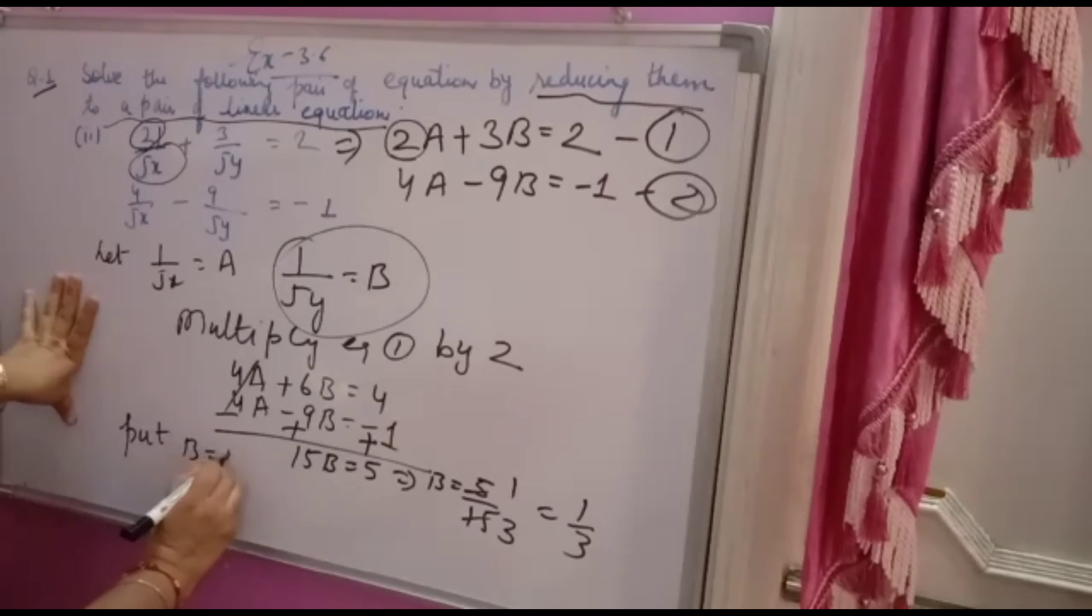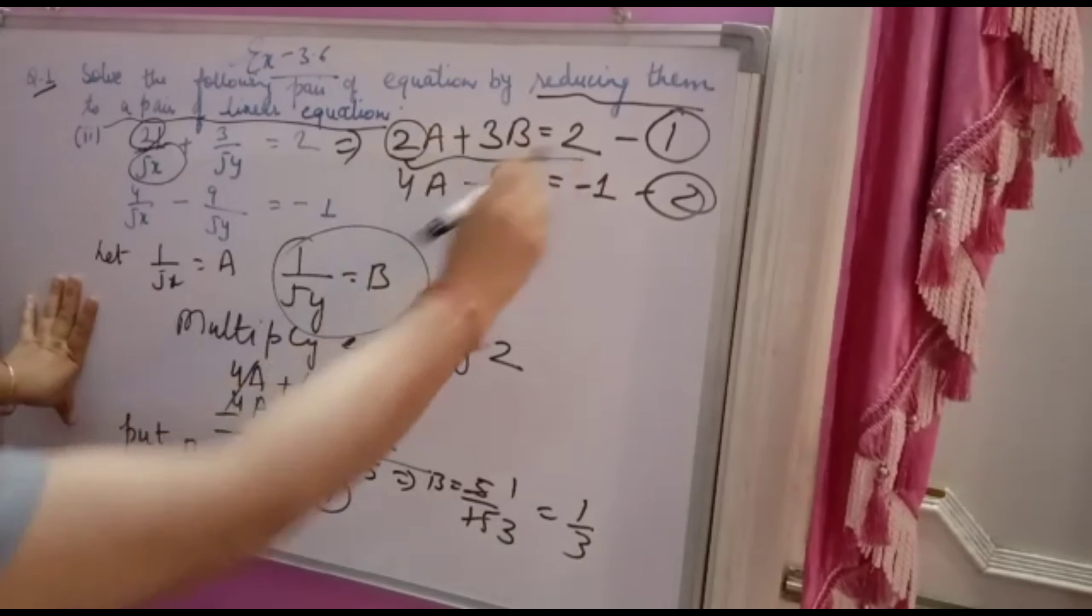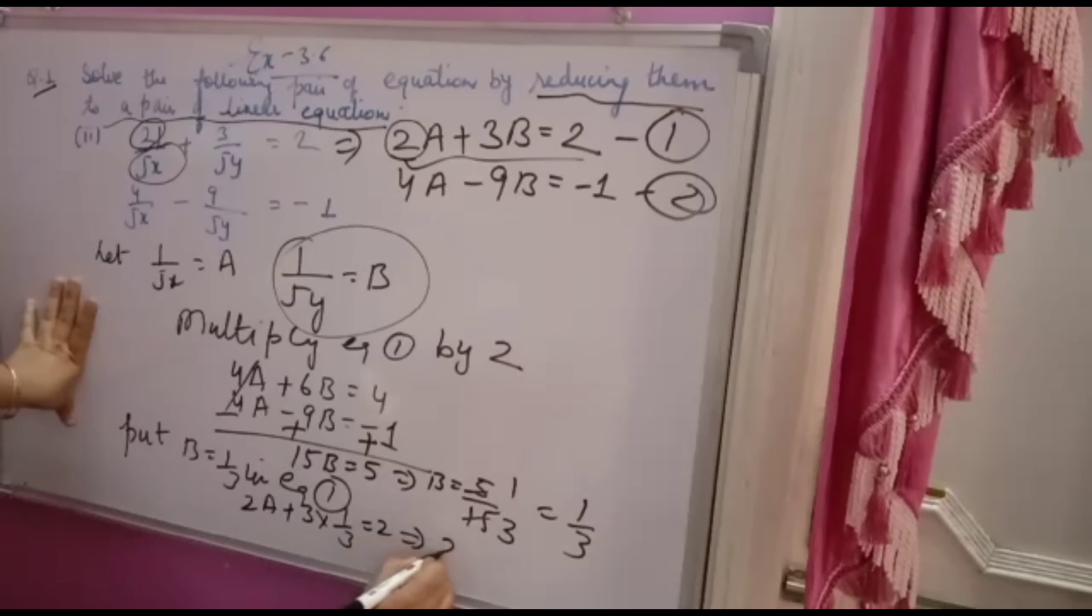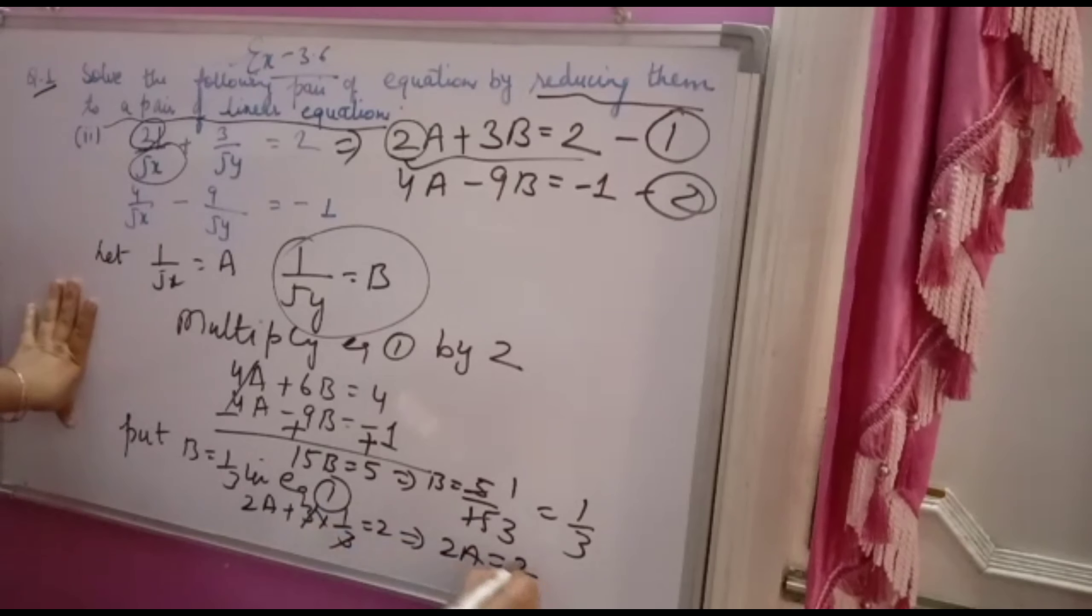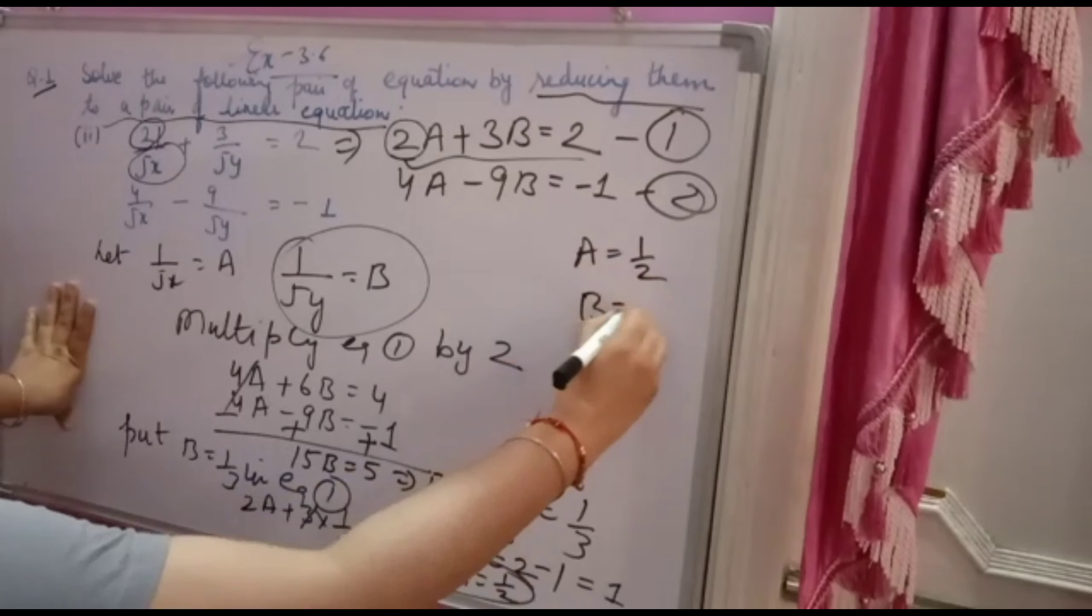Now putting B is equal to 1 by 3 in equation one. You can put in second also. You will get 2A plus 3, 3 into 1 by 3, is equal to 2. We'll get here 3, 3 cancel, only 1 will be left. 2A plus 1 is equal to 2, and that 1 will go, that 1 will become minus. So A will come 1 over 2. A came 1 over 2 and B came 1 over 3.